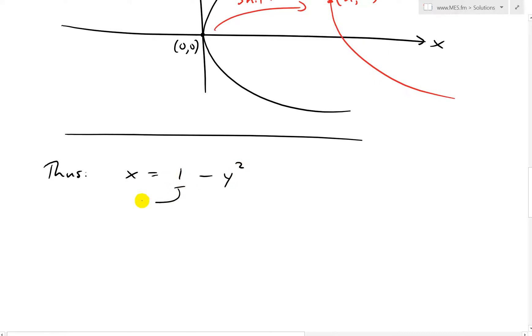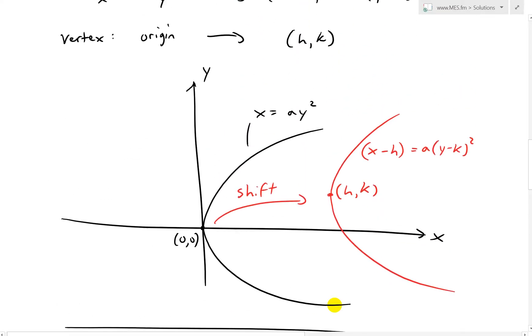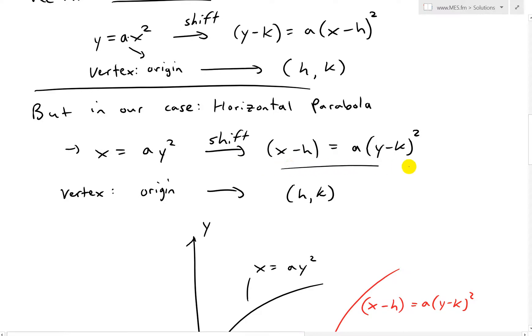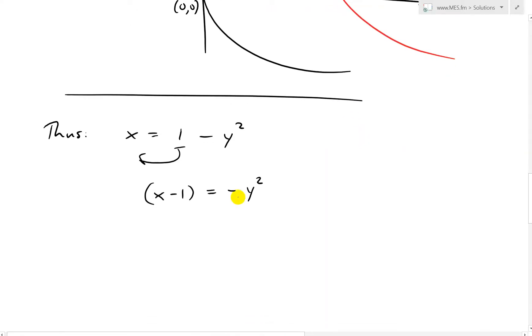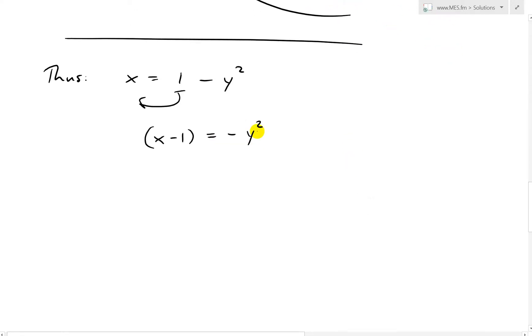So I'll just write thus, x equals 1 minus y squared. In other words, we could just move this around over to this side, and now what we end up having is x minus 1 equals negative y squared. In other words, to make this look like this one over here, that's just going to be our a is now negative 1, and then the k is 0. So this is x minus h equals a times y minus k squared. So then what we have is h equals 1, a equals negative 1, and k equals 0.